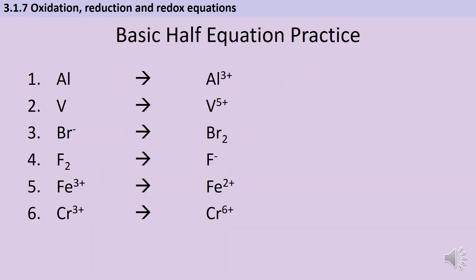Before we make things any more complicated, here are six examples of the type of half equation you should have been comfortable completing at GCSE. Pause the video and make sure that you can finish them off. In each instance you want to be adding electrons to the relevant side of the equation. At GCSE we would have credited the idea of taking them away, but best practice is to just add them on the left or the right as appropriate.